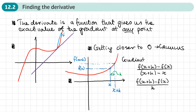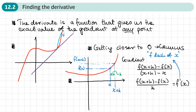Now we need some notation for this gradient. We use the function with a little dash — this is what we call the gradient function, the notation we use. We say F dash of X. So when we're talking about the gradient, we use this notation. This is how we're going to find the gradient.